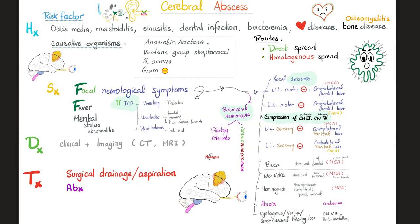Cerebral abscess — let's go. Risk factors include spread of infection from otitis media, mastoiditis, sinusitis, dental infections, bacteremia, and heart disease — especially if I have infective endocarditis with bacterial vegetations on my valve. They can dislodge, leading to a nasty bacterial embolus that can reach my brain. Or if I have osteomyelitis, it can spread and I end up with brain abscess. Organisms could be anaerobes, viridans streptococci from your mouth, staph aureus, or gram negatives. The route could be direct spread like mastoiditis, or hematogenous spread like heart disease.